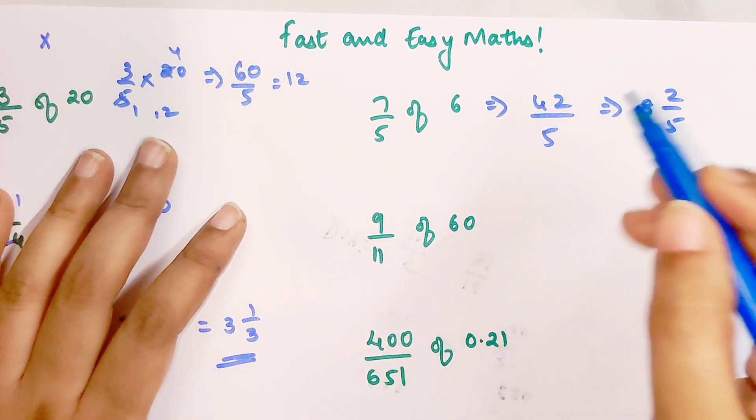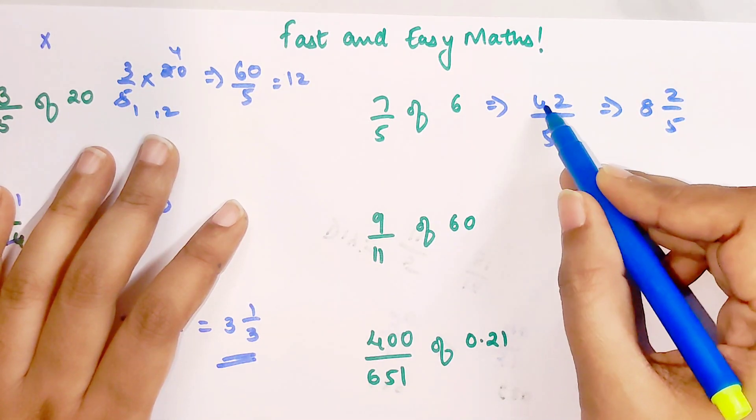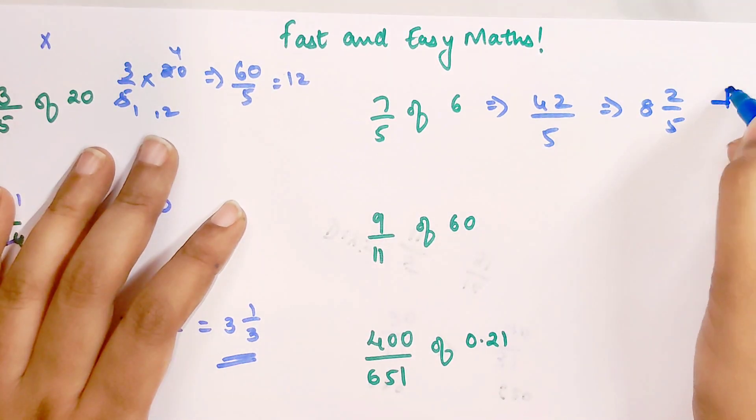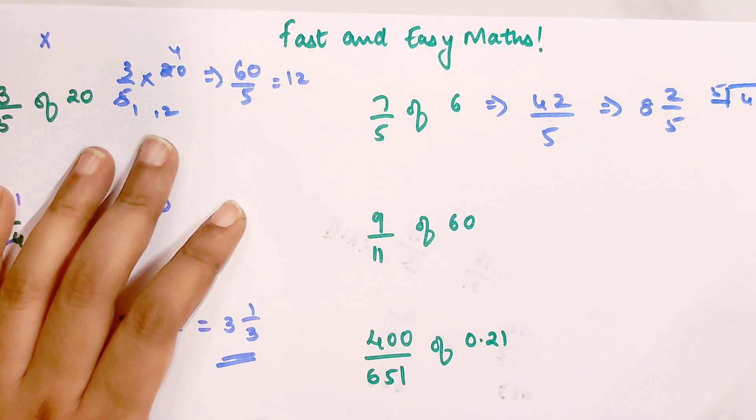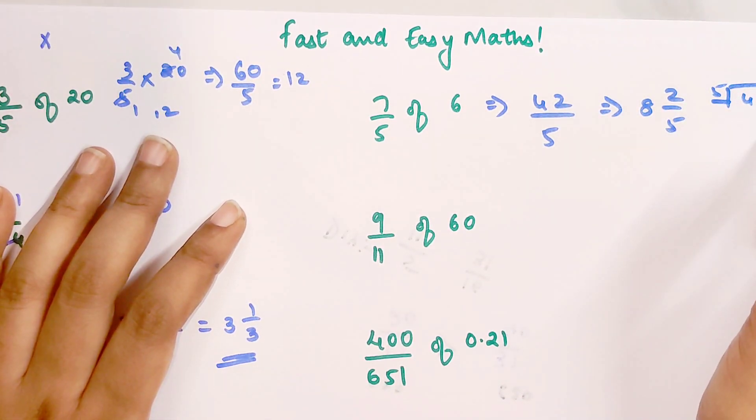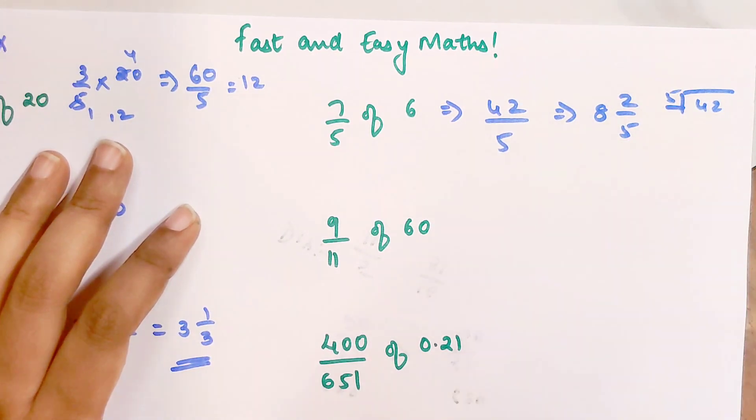For those who find converting an improper into a mixed form difficult, it's very simple. You just put 42 and 5. Whatever you get as your quotient becomes your first number, your remainder becomes your numerator, and your divisor remains as your denominator.